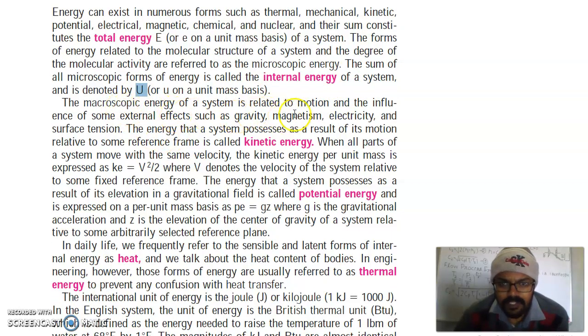The macroscopic energy of a system is related to motion and the influence of some external effects such as gravity, magnetism, electricity and surface tension. The energy that a system possesses as a result of its motion relative to some reference frame is called kinetic energy. When all parts of a system move with the same velocity, the kinetic energy per unit mass is expressed as V squared over 2, where V denotes the velocity of the system relative to some fixed reference frame.